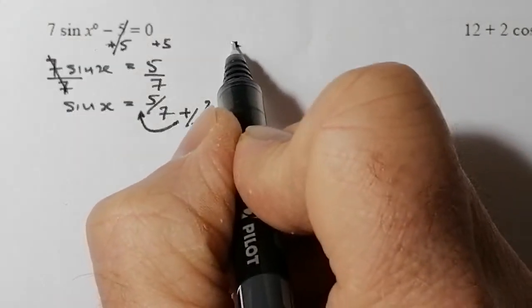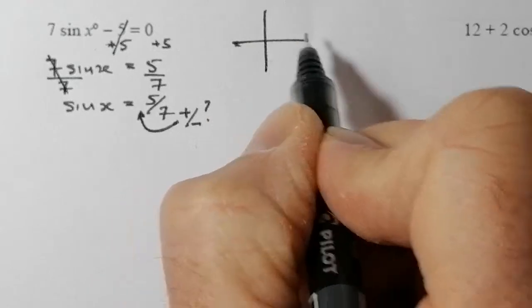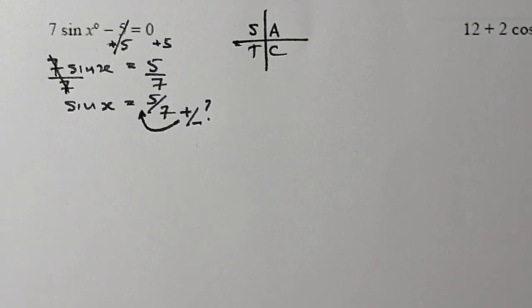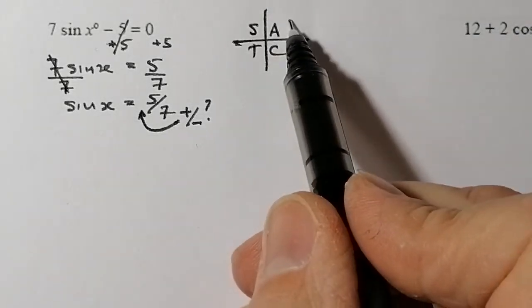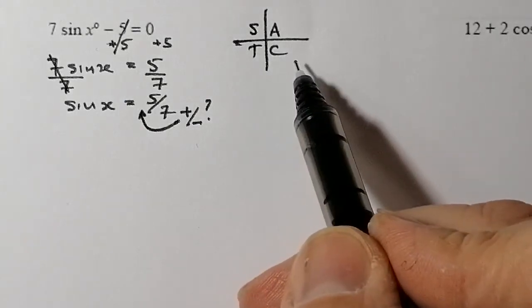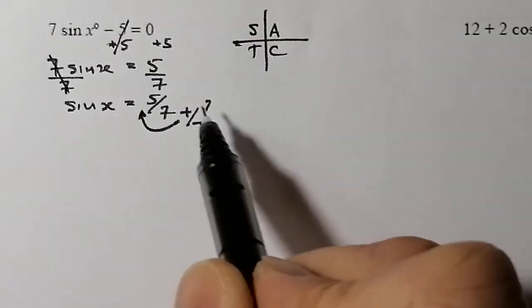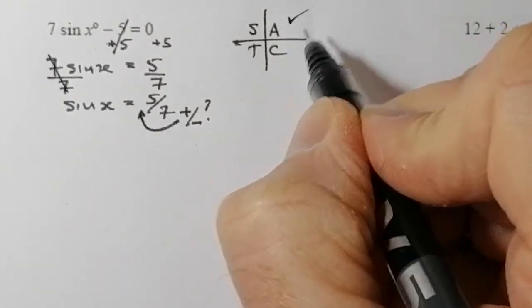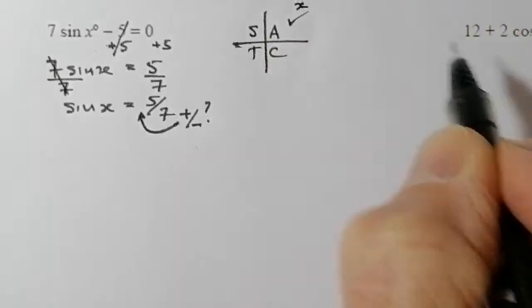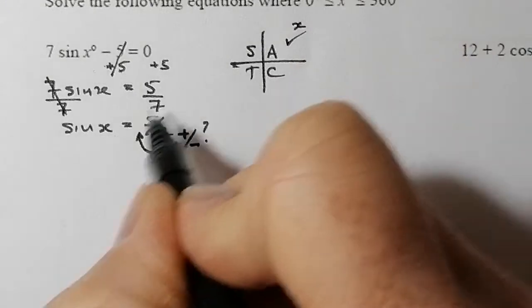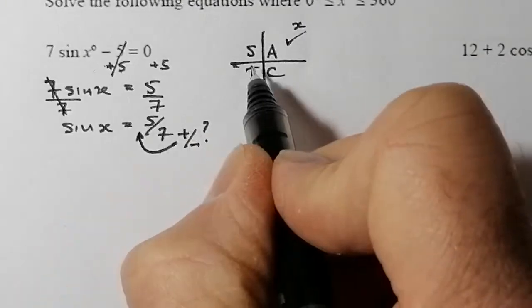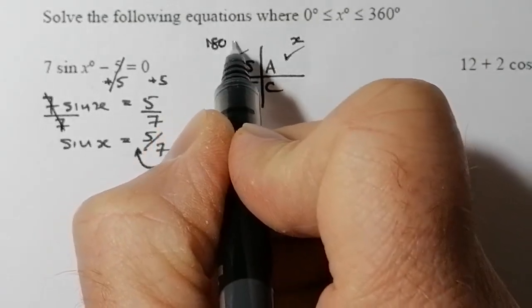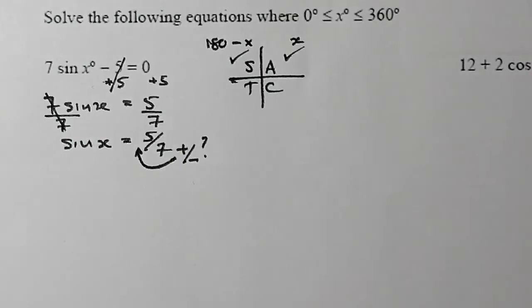So then I would write down the CAST table. We would try and work out which quadrants, quadrant 1, quadrant 2, quadrant 3, quadrant 4, where a positive sin value would end up. All angles are positive in quadrant 1, so I know one of my answers is going to be there. Sin is positive in quadrant 2. To find that angle, I'm going to start with 180 and take away what I've worked out for x.